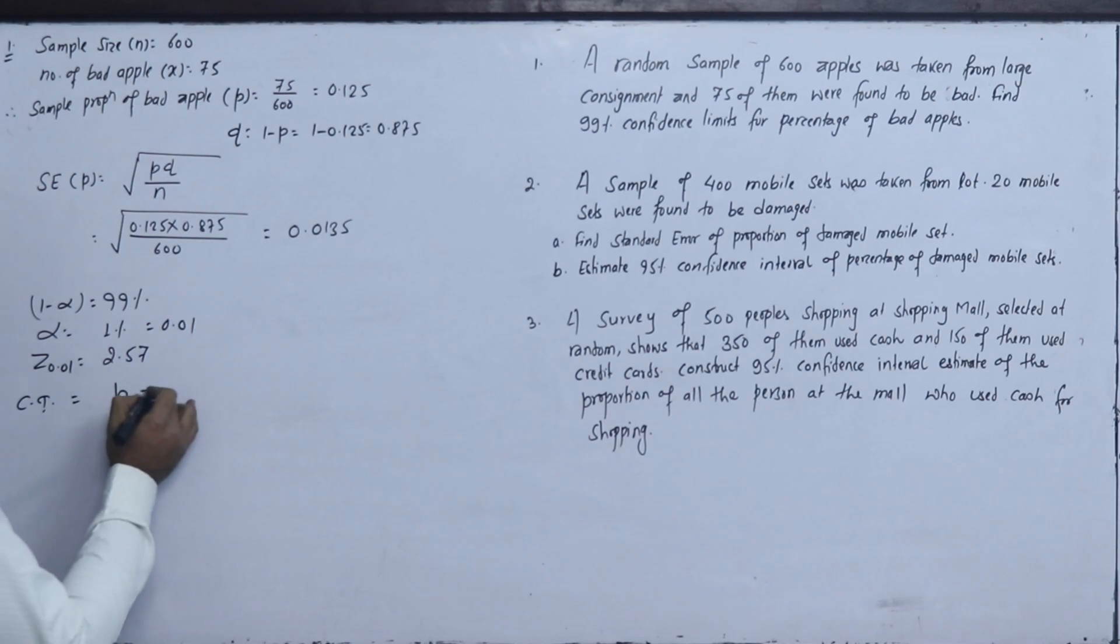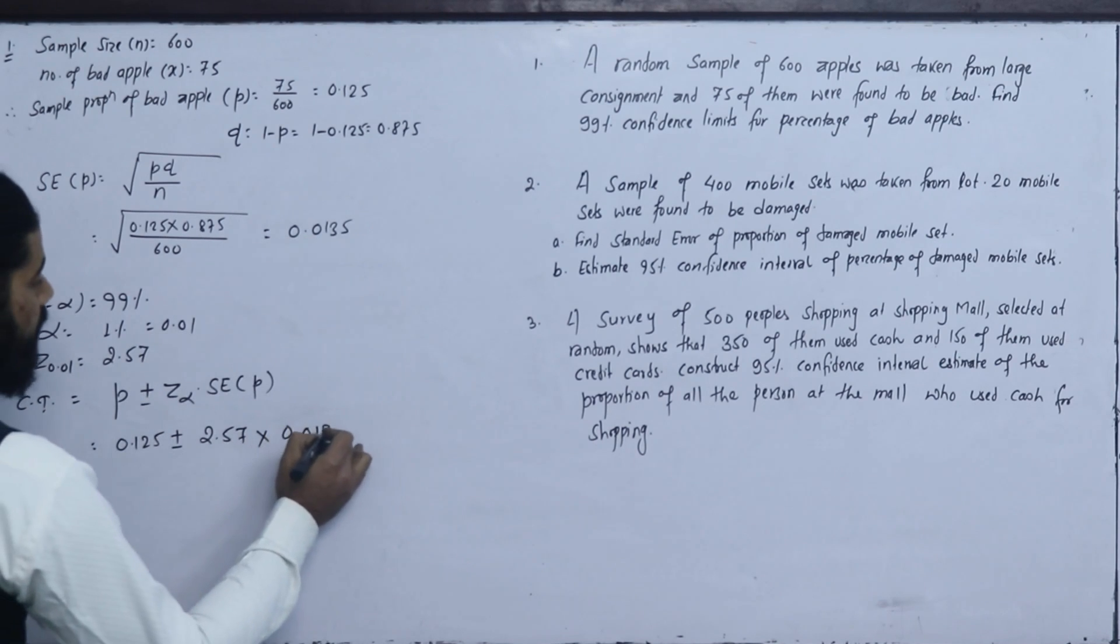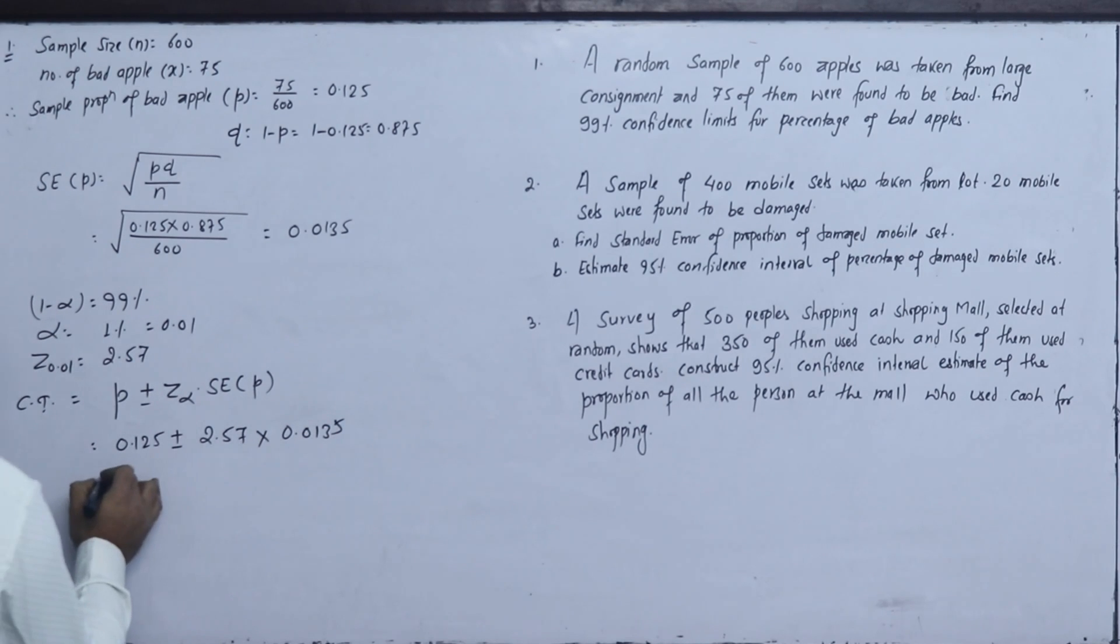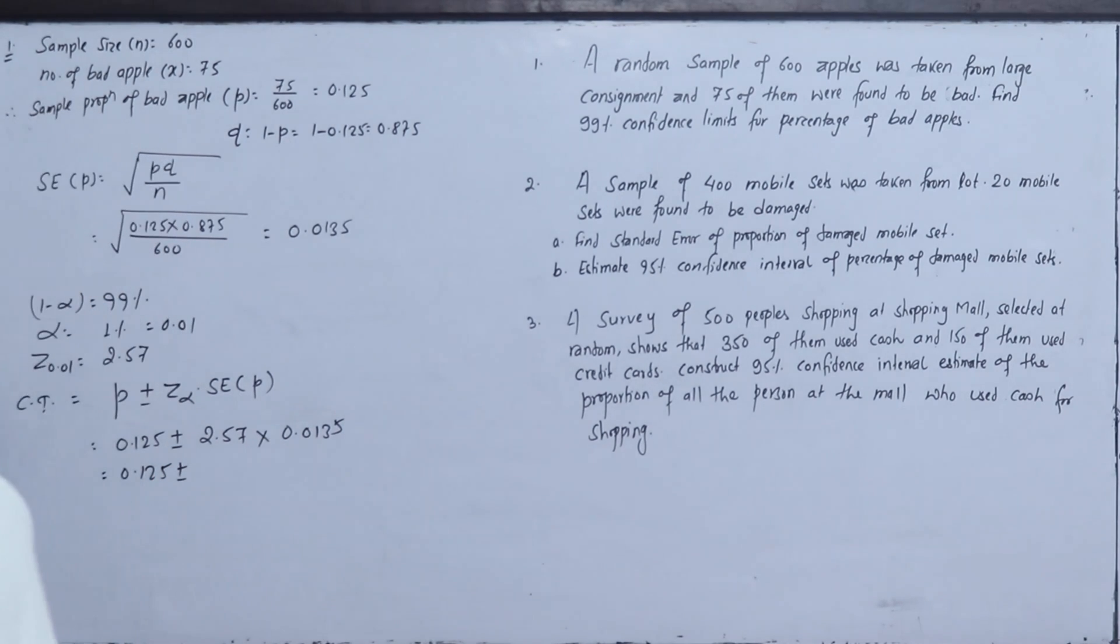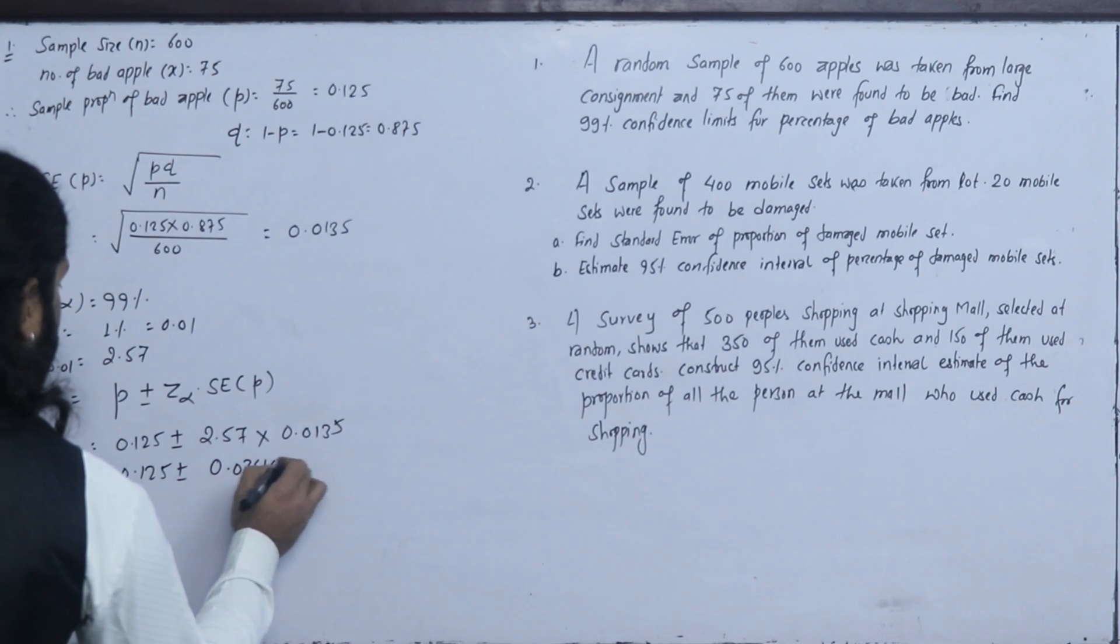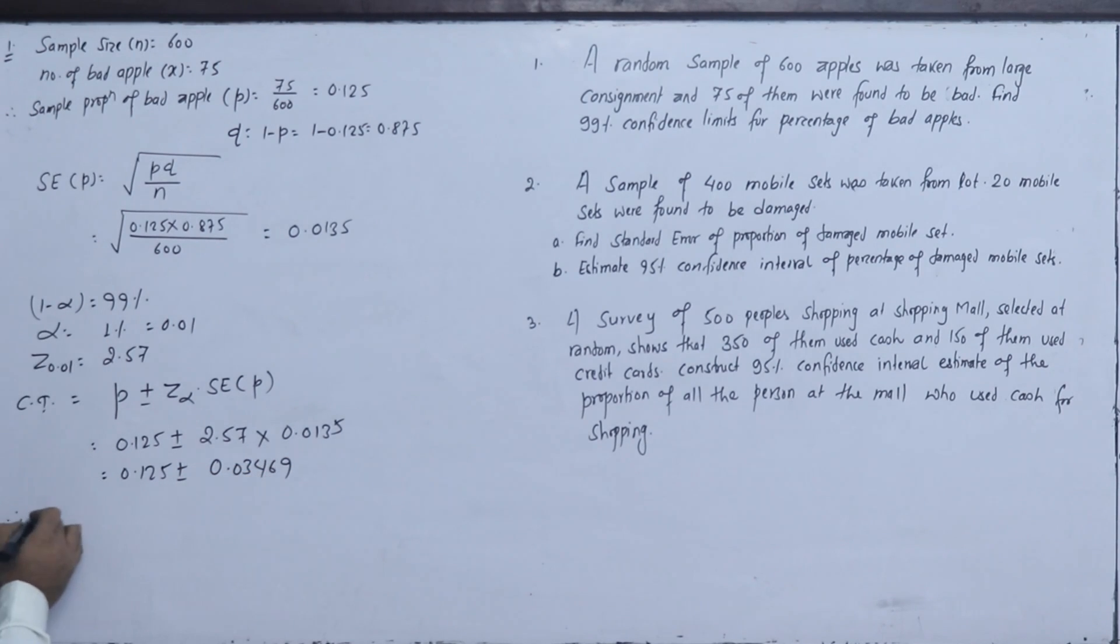Sample proportion plus minus z alpha into standard error about proportion. p is 0.125 plus minus 2.57 into standard error 0.0135. Here we have 0.125 plus minus 2.57 into 0.0135 equals 0.03469.